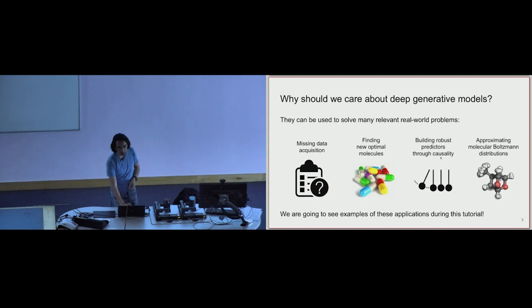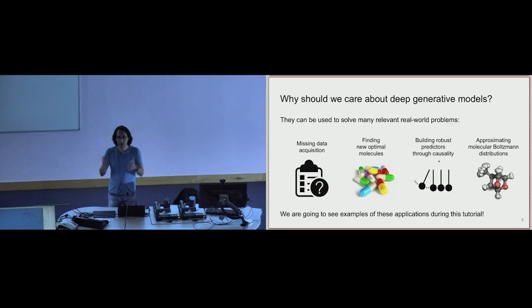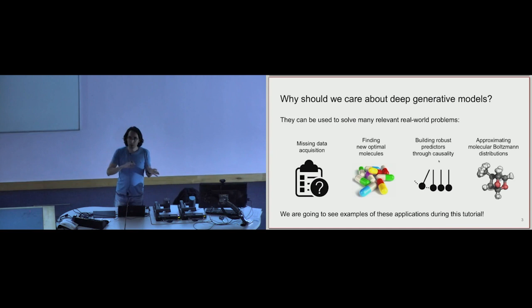We are going to see how to use deep generative models to generate new molecules while knowing how to synthesize those molecules in practice. I will describe synthesis-aware deep generative models of molecules that output new molecules and also tell you how to synthesize them. Another example is robust predictions: in many datasets you may have spurious correlations or spurious dependencies. This happens in healthcare — data from different hospitals may have been collected under different biased processes that introduce spurious correlations. You may want to build robust predictors that don't rely on spurious correlations using deep generative models.